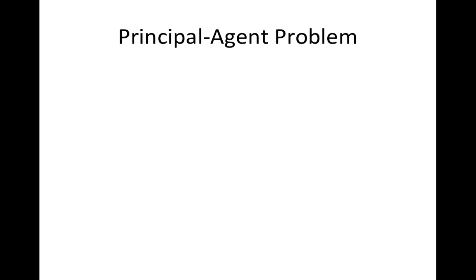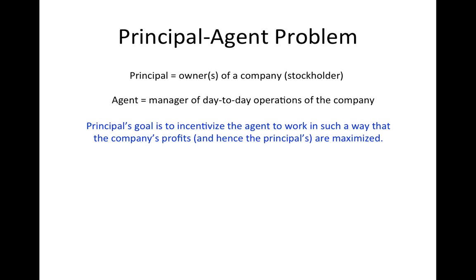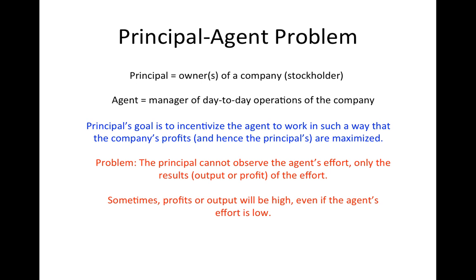The second type of information problem we encounter in markets is the hidden action problem, illustrated by the principal-agent problem. In this market there are two participants: the principal — who we will think of as the owners of a company, usually stockholders — and the agents, who are the people who work for the stockholders. The principal's goal is to incentivize the agent to invest effort into the company to maximize the principal's profits. The problem is that the principal cannot observe the agent's effort, only the results of the effort, which — due to the vicissitudes of the market — are sometimes high even if the agent only invests low effort.